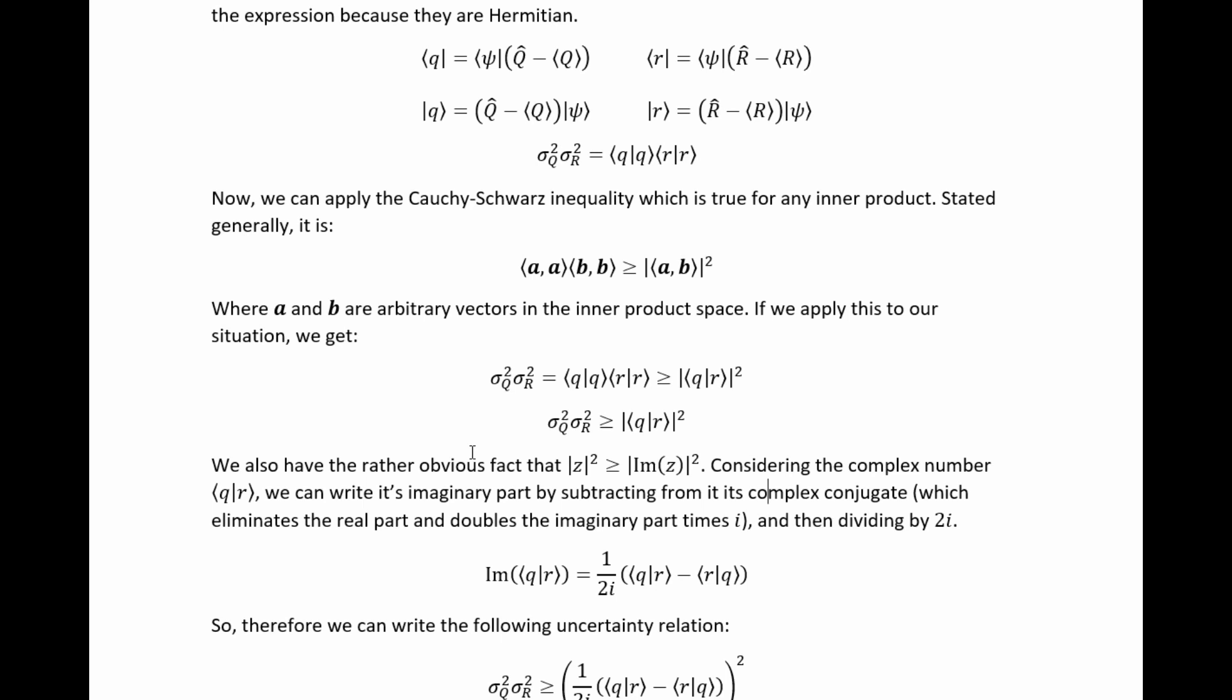Now, the second inequality that we're dealing with here that we're going to use to usefully rewrite this side of the relation is this fact that the absolute square of a complex number is greater than or equal to the square of the imaginary part. So, by absolute square here, I mean the complex number times its complex conjugate. Now, the specific complex number we're dealing with here is this.